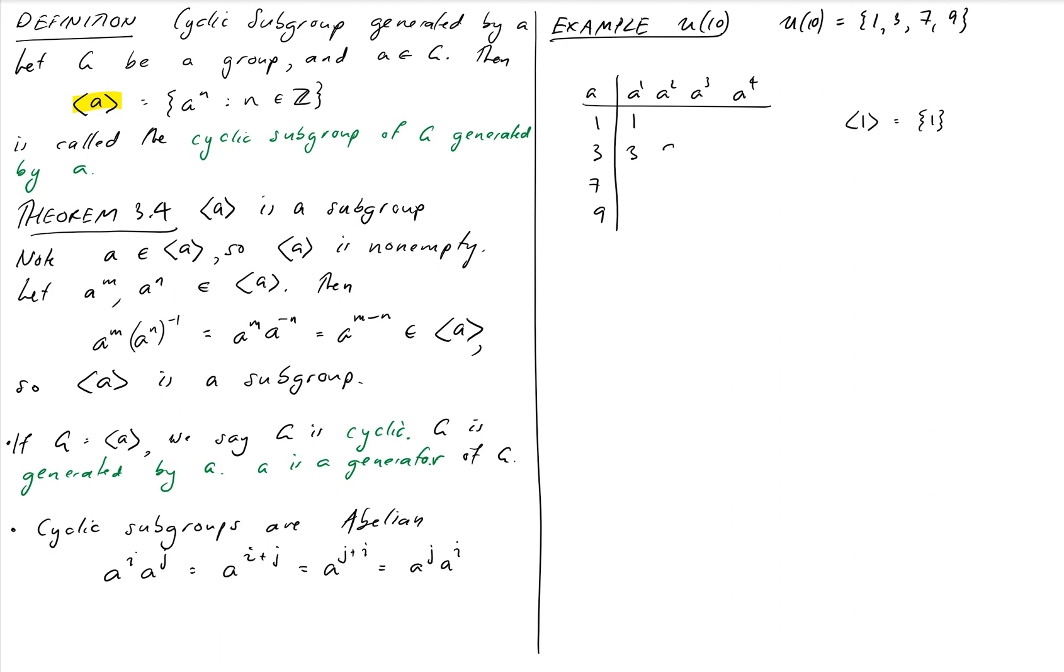Multiply by 3 again get 27 which is 7 mod 10. 7 times 3 is 21 which is 1 mod 10. And so the cyclic subgroup generated by 3 is actually the whole of U of 10 itself, which interestingly means that U of 10 is in fact a cyclic group even though it doesn't look much like one.